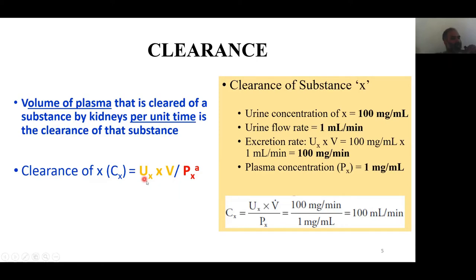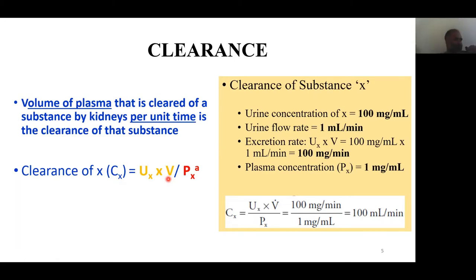Ux means the concentration of substance X in urine, which is measurable — you take a urine sample and measure how much substance X it contains. Multiply that by the rate of urine formation, which in a normal person at rest is generally around 1 ml per minute. Divide by the plasma concentration of substance X. All of these values are known, and the result you get is the clearance — the clearance rate of that substance from the plasma.